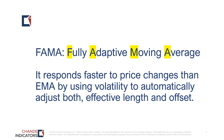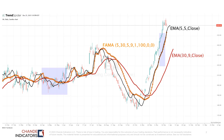FEMA uses volatility to automatically adjust both the effective length and the offset. So let's dive in and see how it works. This is daily data for Boeing and we have three lines on the chart. The black line is the five-day EMA with a five-day offset, and the red line is the 30-day EMA with a nine-day offset.